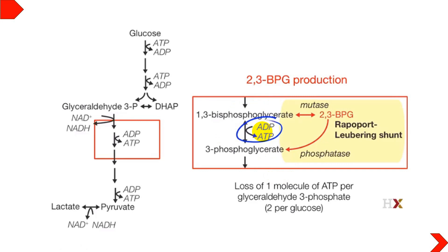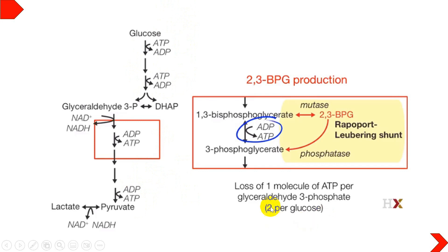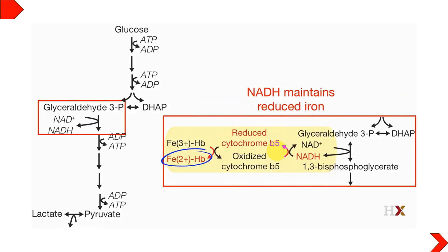The net ATP produced when red blood cells go through the Rapoport-Luebering Cycle is zero. Two ATPs are lost at the bypassed step, and only 2 ATPs are produced at the pyruvate kinase stage; since 2 ATPs were invested initially, the net result is zero ATP. This is important because when red blood cells have no need for energy, they use this cycle to dissipate or waste energy.